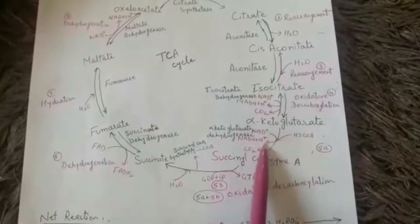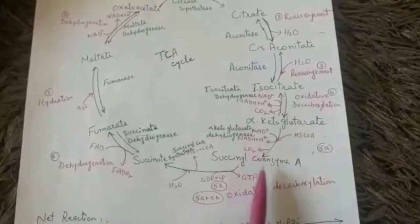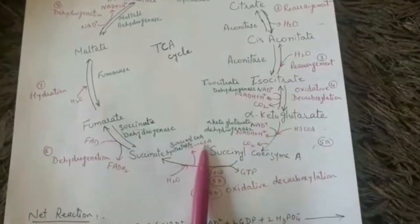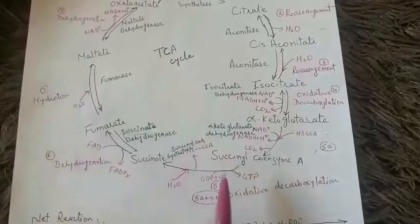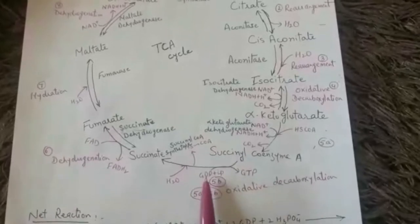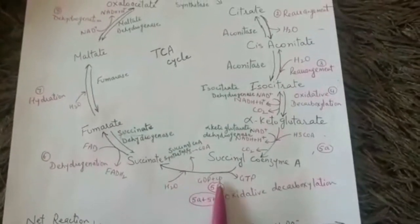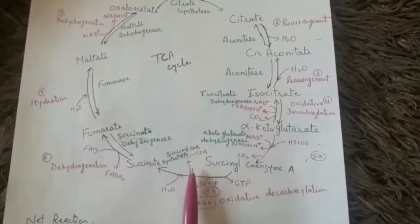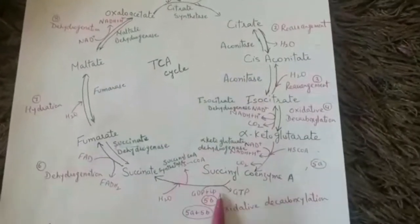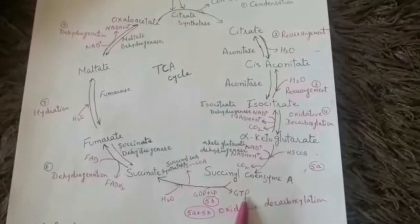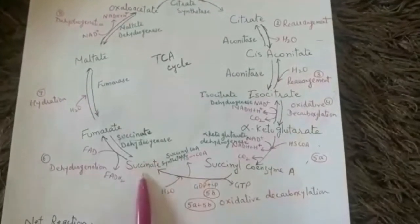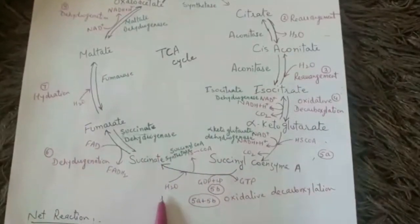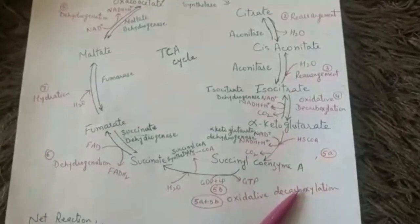The enzyme for this step is alpha-ketoglutarate dehydrogenase. In the second sub-step, succinyl coenzyme A undergoes addition of a water molecule, releasing coenzyme A. When this bond breaks, energy is produced, which is used to combine GDP (guanosine diphosphate) and inorganic phosphate to form GTP. The product is succinate, and the enzyme is succinate synthetase or succinyl coenzyme A synthetase.